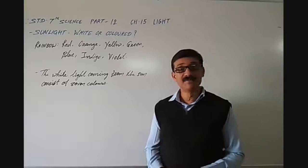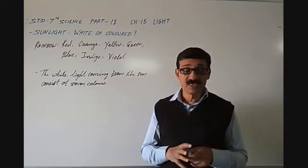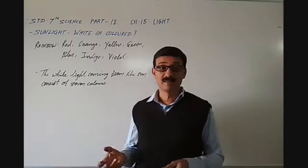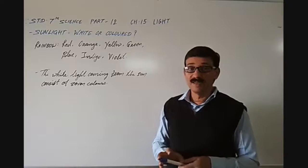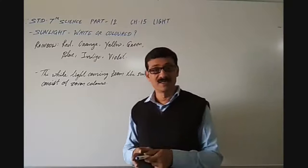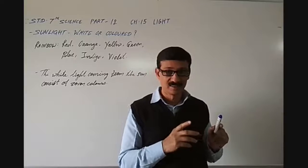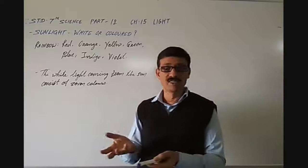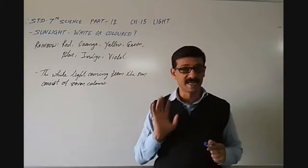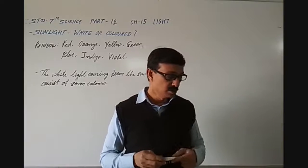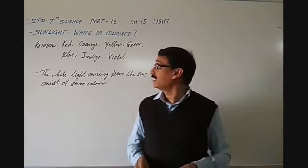In the last part we did an activity through which we came to know that with the help of a convex lens we generally get real images, and those are inverted. With concave lenses we get images which are always virtual and direct. That is what we covered in the last part. Now in this part we will learn about sunlight.